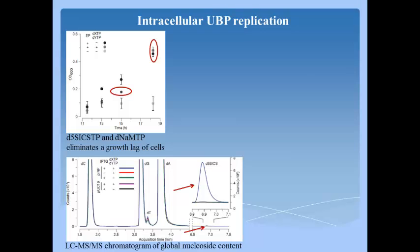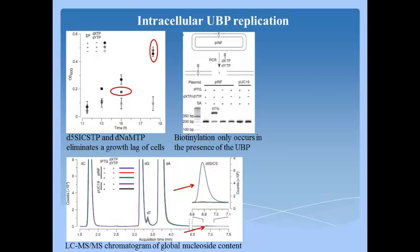A clear signal of unnatural base pair was observed in the mass spectra. To independently confirm and quantify the retention of unnatural base pair in the recovered plasmid, the relevant region was amplified by PCR in the presence of unnatural triphosphate and a biotinylated analog as shown in this figure. Analysis by streptavidin gel shift showed that 67% of the amplified DNA contained biotin.